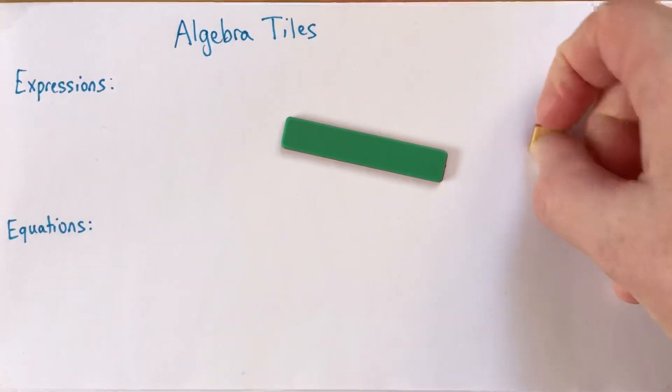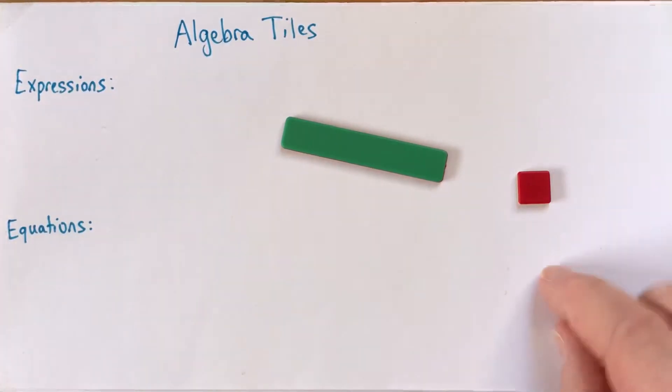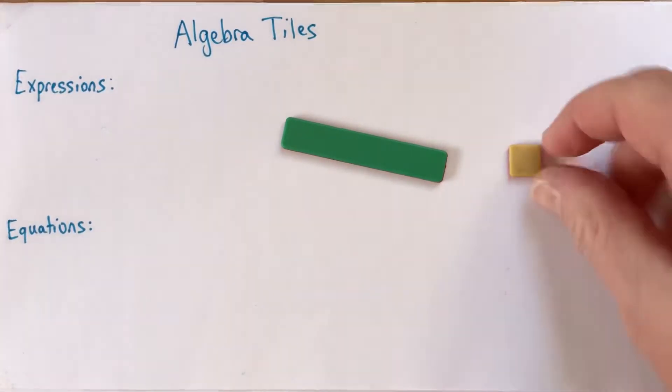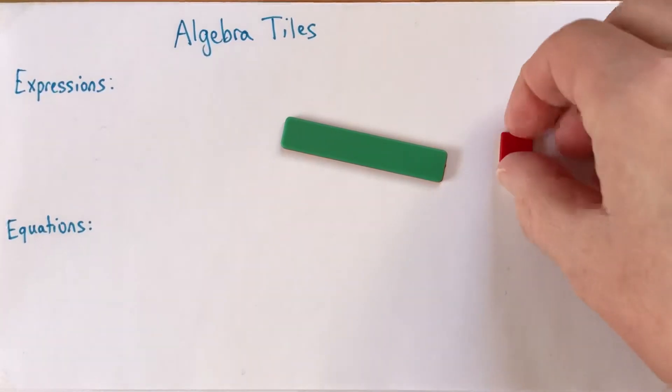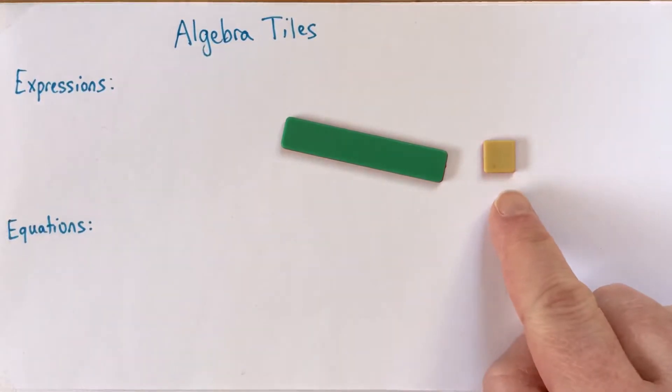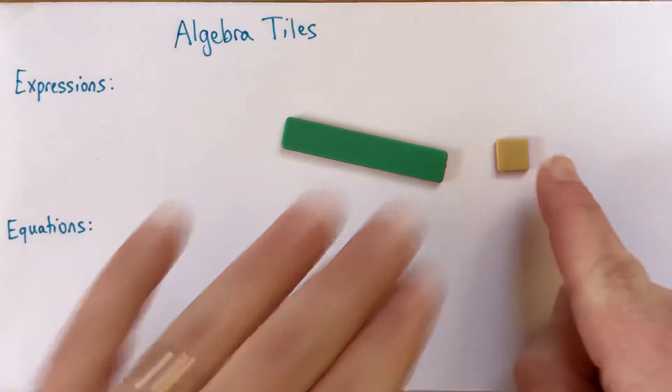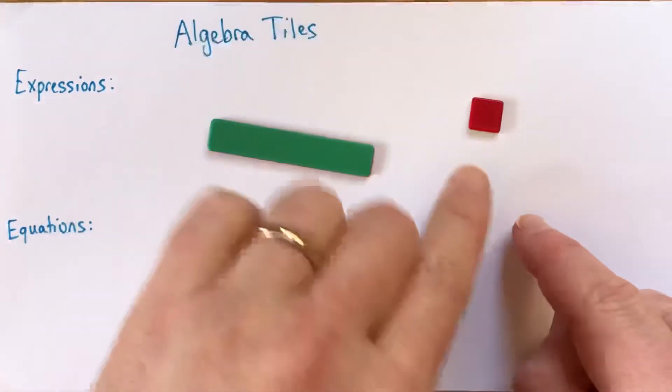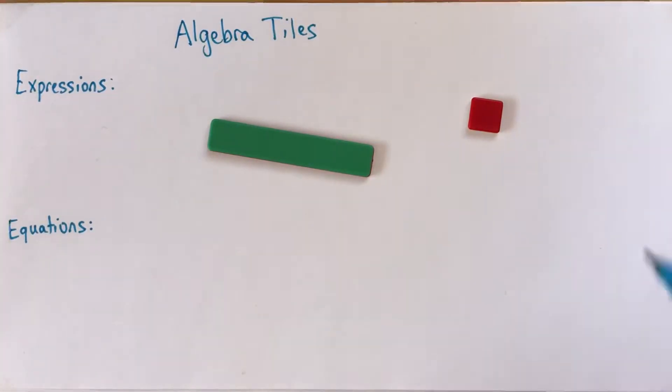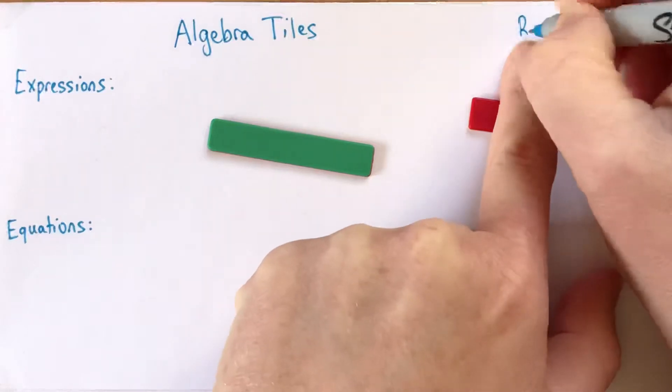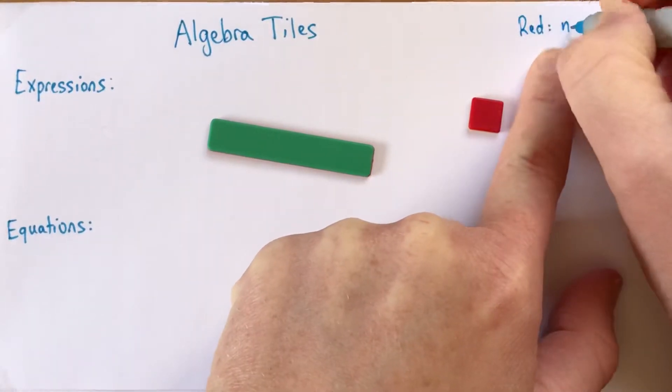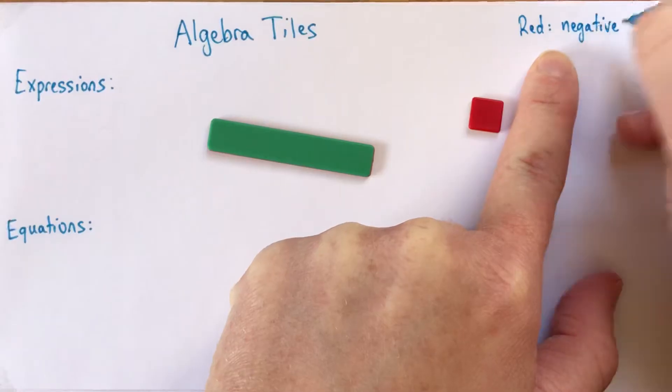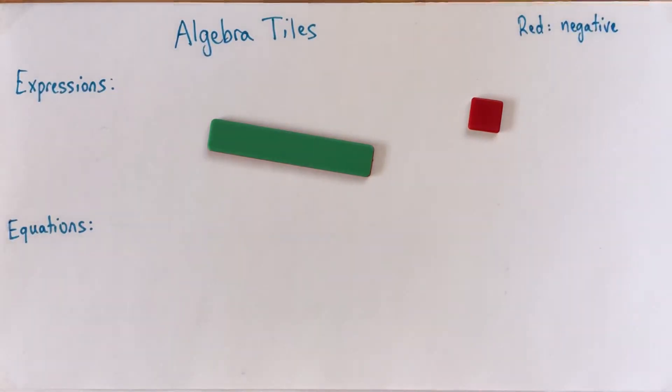This is basically the same as a two-color counter, which you may have used for adding and subtracting integers. Mine is yellow and red. It doesn't matter what colors they are, as long as you can tell one side from the other. We'll use one color to represent positive things and one color to represent negative. I always use red for negative, and other people might do the opposite. It doesn't really matter.